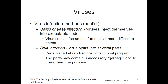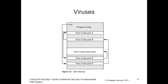Split infection is where the virus splits into several parts, placed at random positions in a host program, making it harder to detect because you don't see the entire code. The parts that are unnecessarily garbage don't reveal the true purpose until you look at the overall code or structure. You may have the entire program code with sections of code sparse throughout it — what looks like junk code is actually a sophisticated virus.